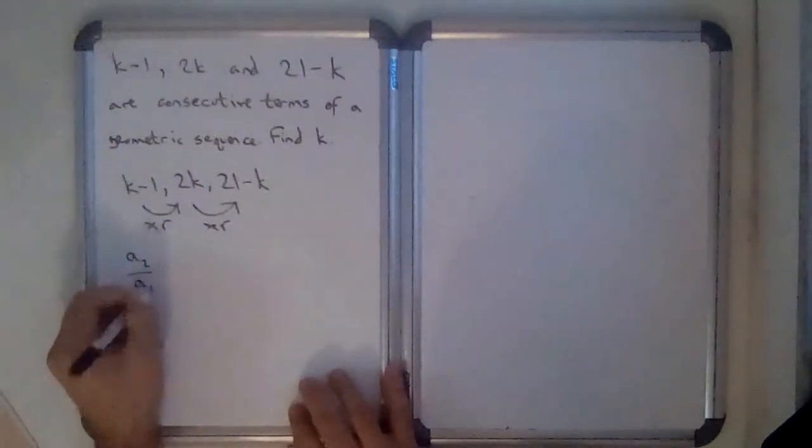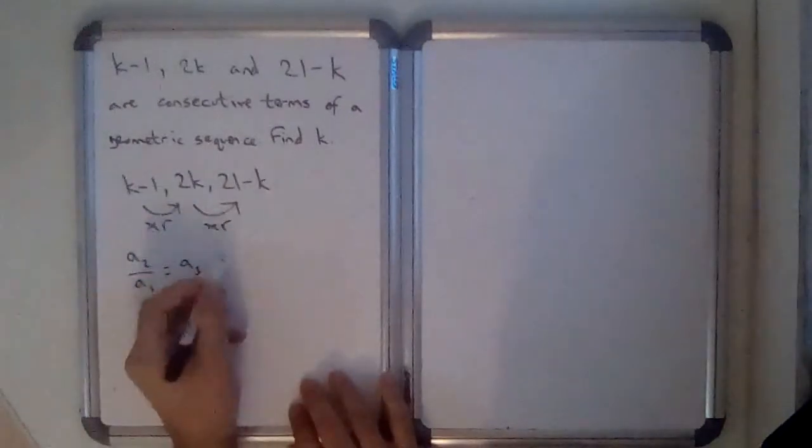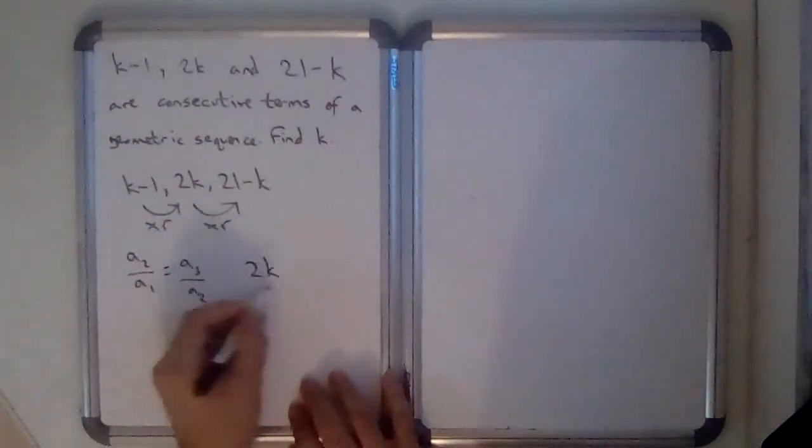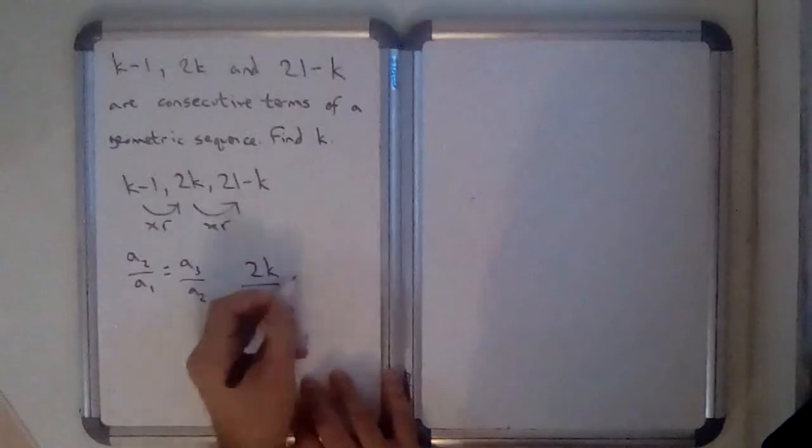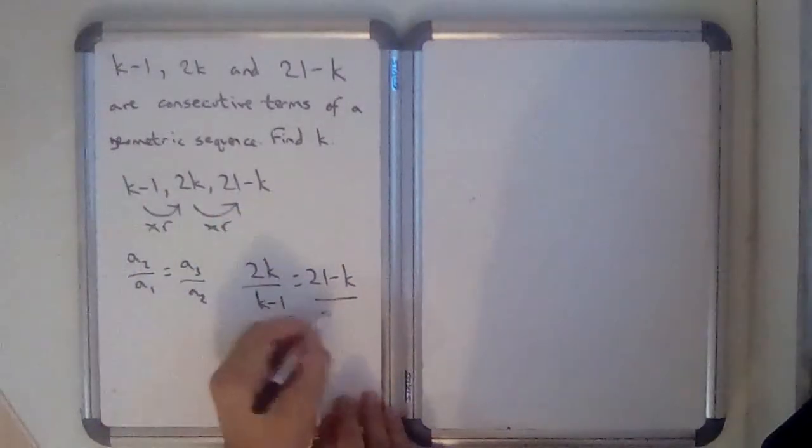...so a2 over a1 is going to be the same as a3 over a2, which means 2k over k minus 1 must be exactly the same as 21 minus k over 2k.